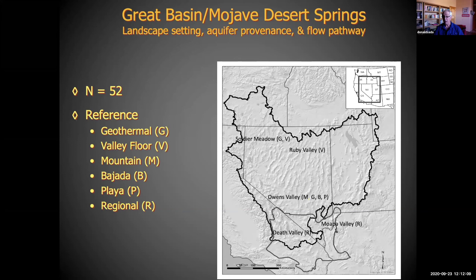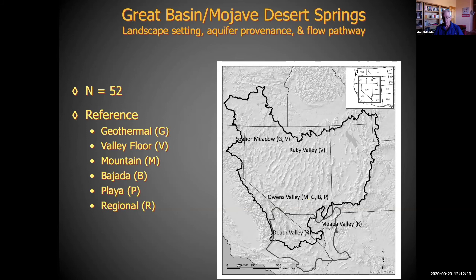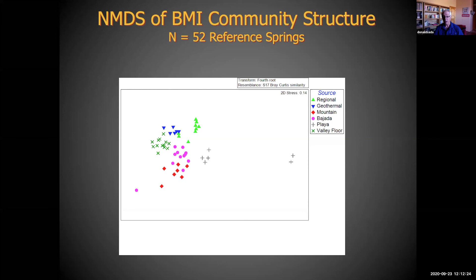Finding springs in good condition to do some of these types of studies is kind of difficult. Looking at reference springs from geothermal, valley floor, mountain, bajada, playa, and regional springs scattered throughout the region — doing a multidimensional scaling analysis — you find that these benthic communities fall out really strongly. All are statistically significant from one another, except for mountain and bajada springs, where there's no difference. You get very strong clustering of geothermal springs, regional springs, valley floor springs, and playa springs scattered all over the Great Basin. This gives an idea of the importance of geochemistry on these systems.